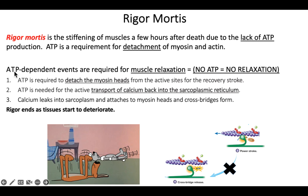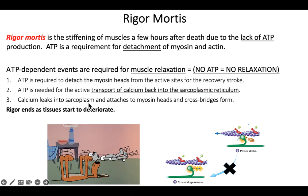Let's look at a few of the ATP-dependent events. First, ATP is required for detachment of the myosin heads — if there's no ATP, those cross bridges are all locked together, so they're stuck. Second, ATP is needed to transport calcium back into storage, so the calcium stays attached to troponin. The myosin is locked together with the actin, and that muscle is stiff. Calcium also leaks into the sarcoplasm, adding more calcium to troponin and causing more cross bridges.